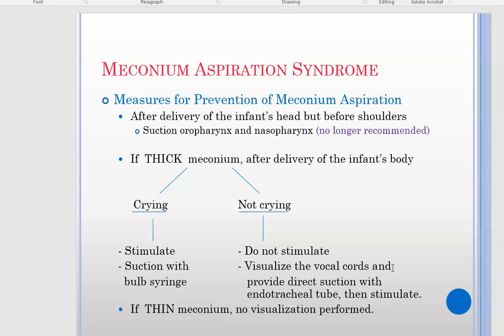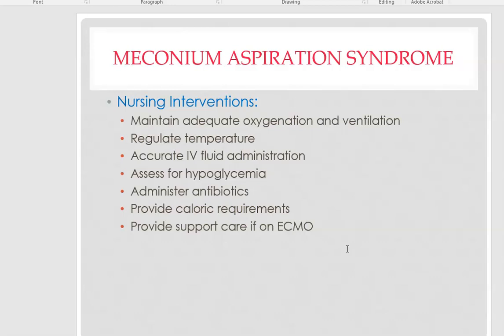After birth, the key question is: is the baby crying or not crying? If they're crying, they'll suction the mouth with a bulb syringe. If they're not crying, they may provide respiratory support or insert an ET tube to see if there is meconium below the vocal cords and suction it. It really just depends on the clinical situation.